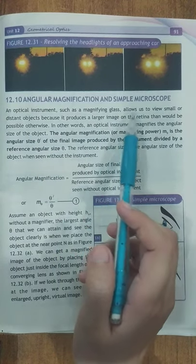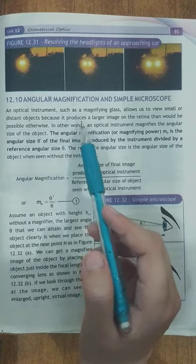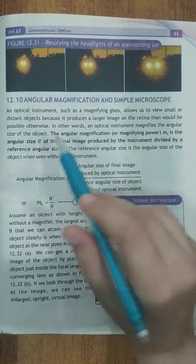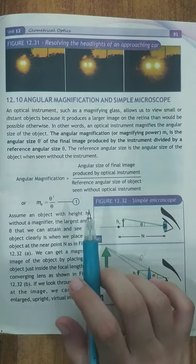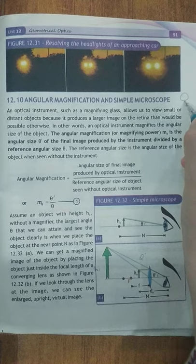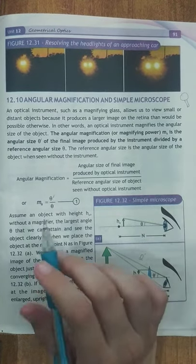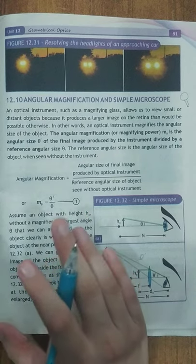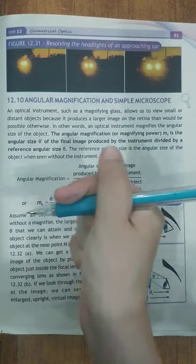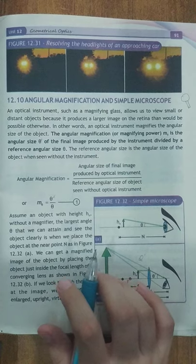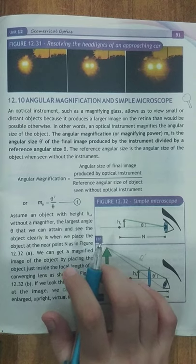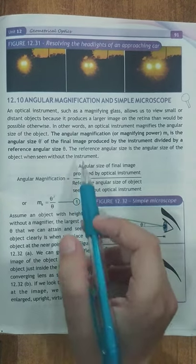An optical instrument such as a magnifying glass allows us to view small or distant objects because it produces a larger image on the retina that would not be possible otherwise. Hamare paas ek magnifying glass hota hai jo ek optical instrument hai. Aap ne dekha hoga daily life mein — is se hum chhote objects ko clearly dekh sakte hain, unka bada image nazar aa raha hota hai. Magnifying glass retina peh in cheezon ka larger image banata hai jo other situation mein possible nahi hota.